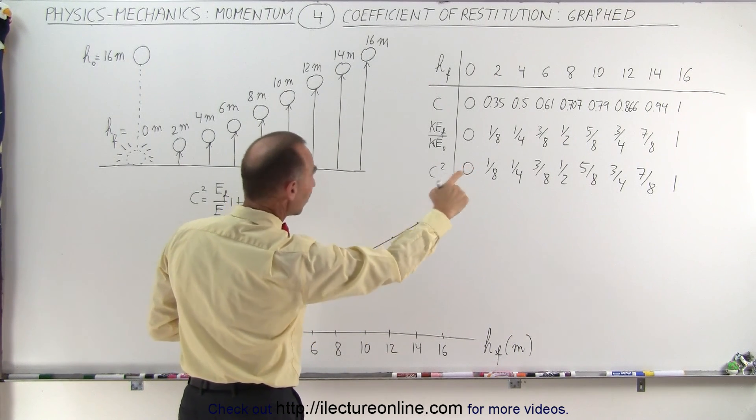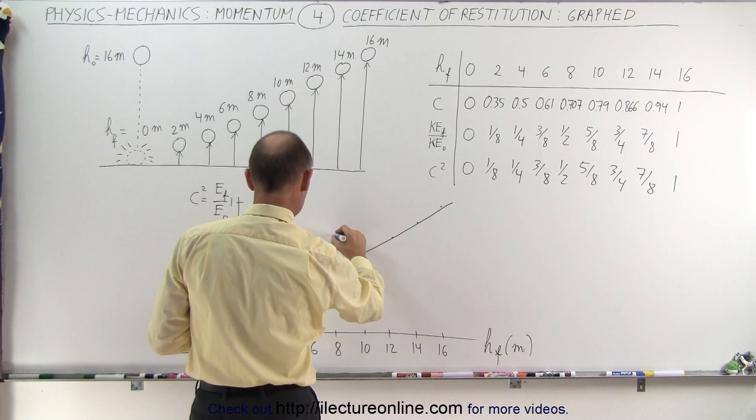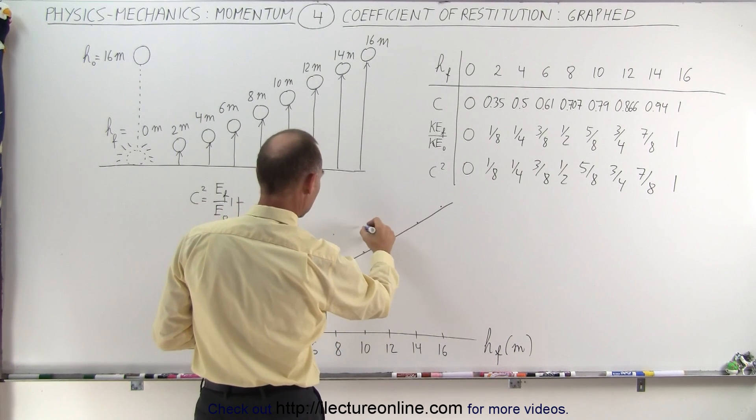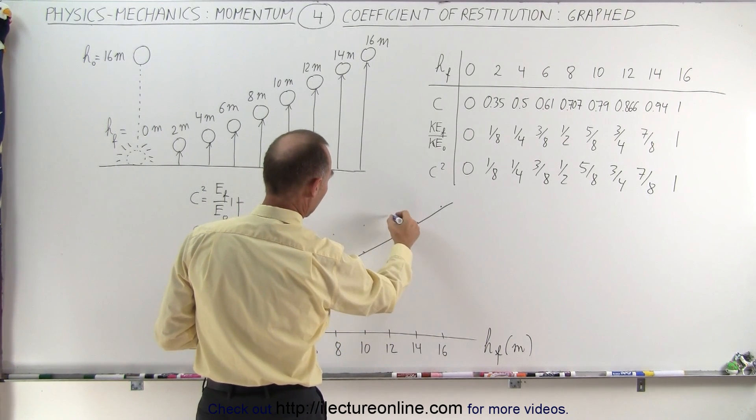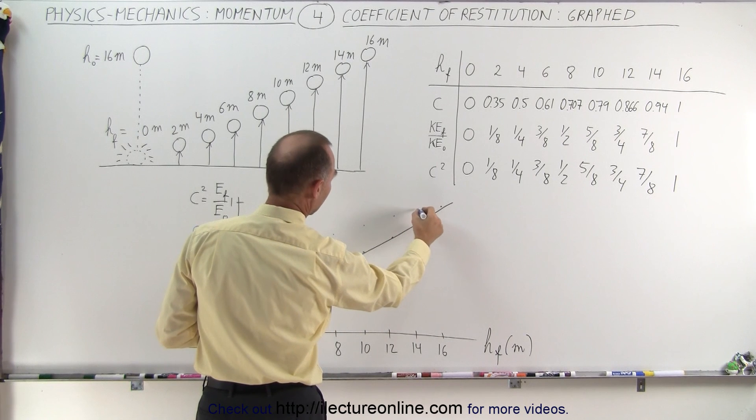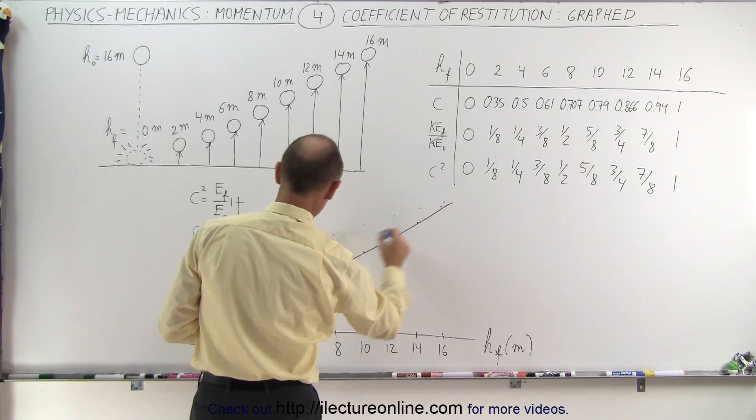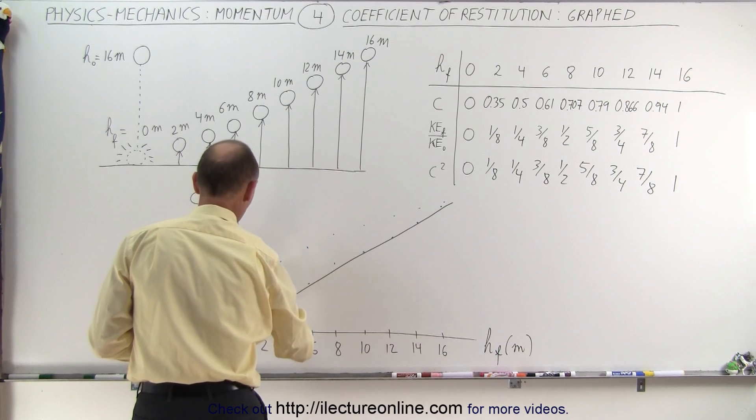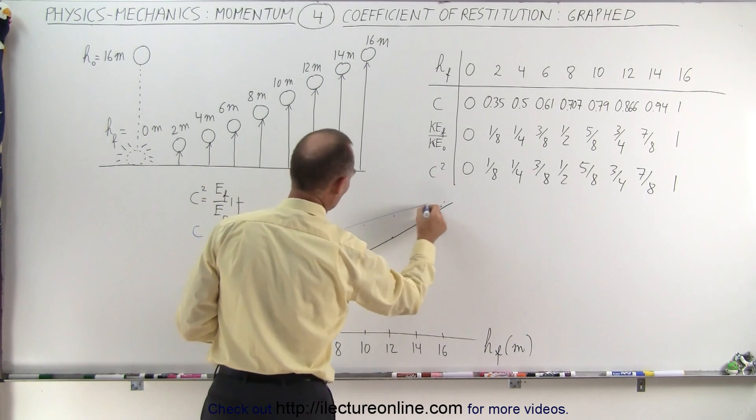At eight meters, it's 0.707. And continuing on like that, and like that, and like that. And finally, like this, and you can see that when we try to graph the coefficient of restitution...